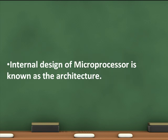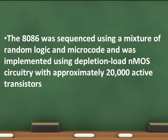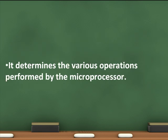The internal design of a microprocessor is known as the architecture. The 8086 was sequenced using a mixture of random logic and microcode, and was implemented using depletion load NMOS circuitry with approximately 20,000 active transistors. The architecture determines the various operations performed by the microprocessor.